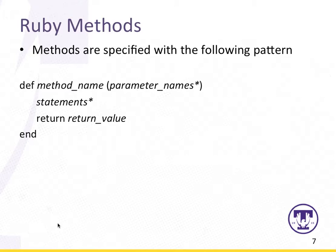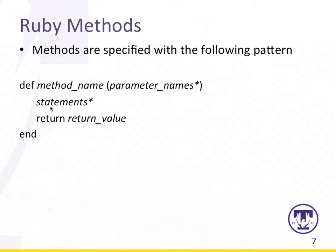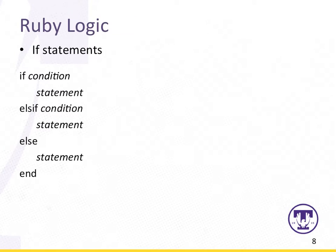In Ruby, methods are specified with the def and end keywords. You can specify a return statement and a return value. If you don't include return and a return value, the method will take whatever the last statement was that was evaluated and output that as the return value. It's probably better to go ahead and explicitly specify the return value for the methods.